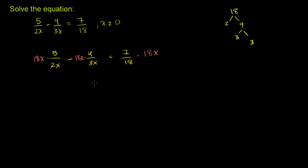We're taking essentially the least common multiple of 2x, 3x, and 18. This is the smallest number that is divisible by all three of these characters.